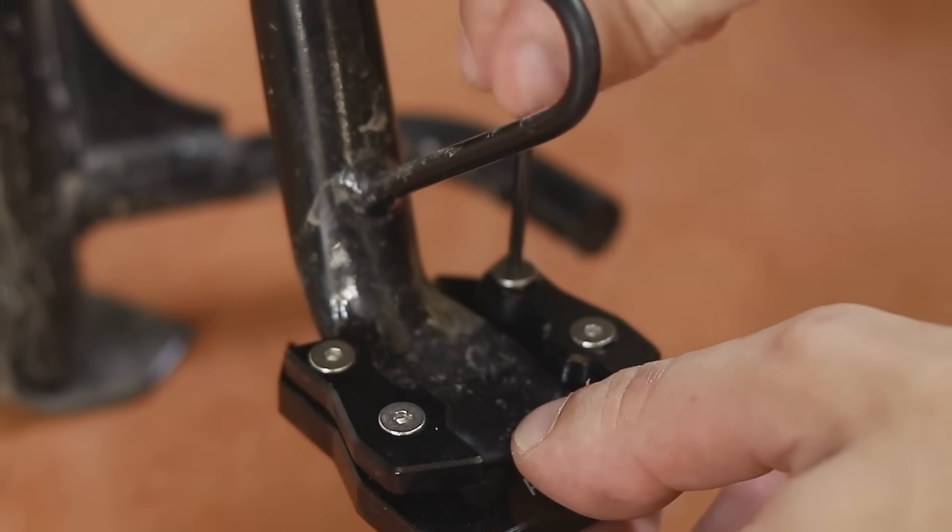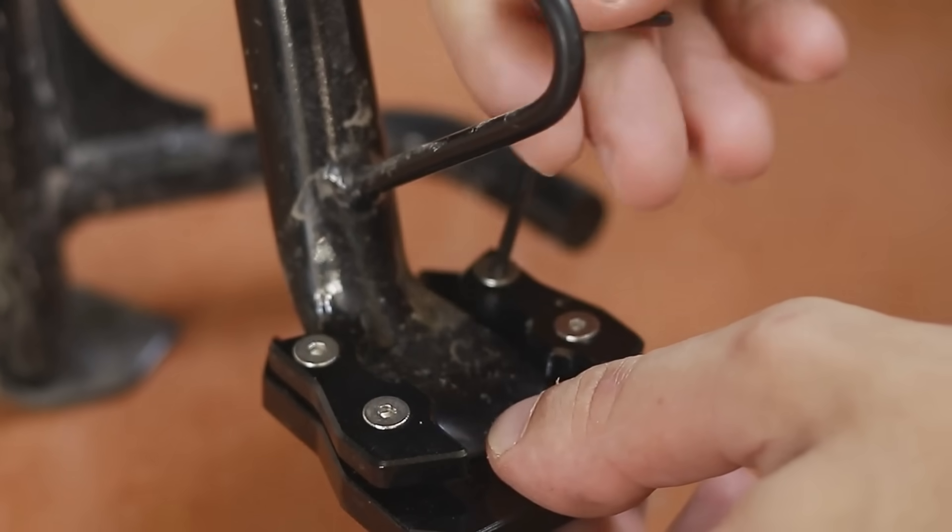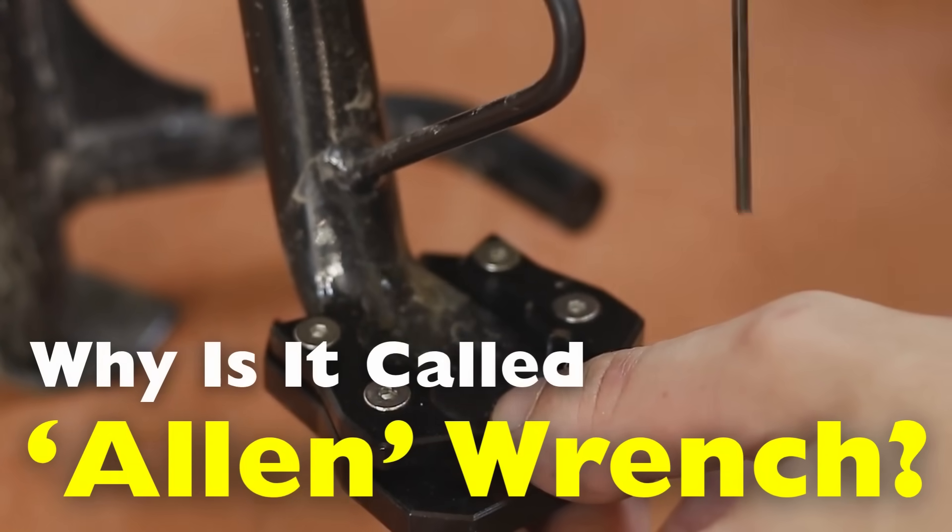Have you ever opened a new piece of furniture, a bike repair kit, or a set of tools and wondered why that tiny L-shaped metal tool is called an Allen wrench?